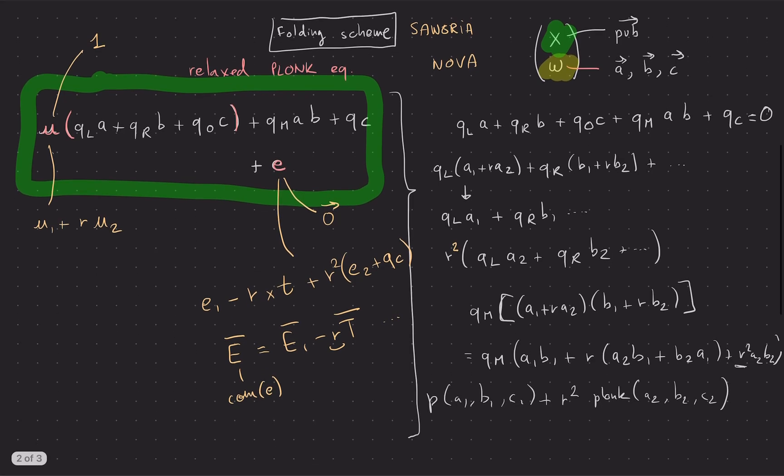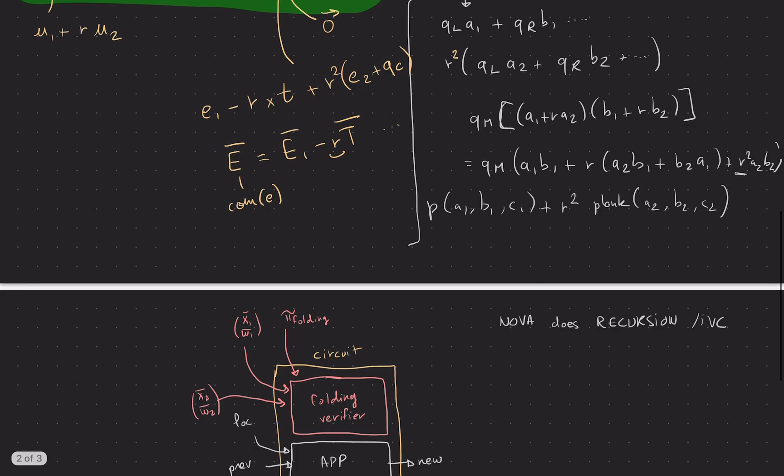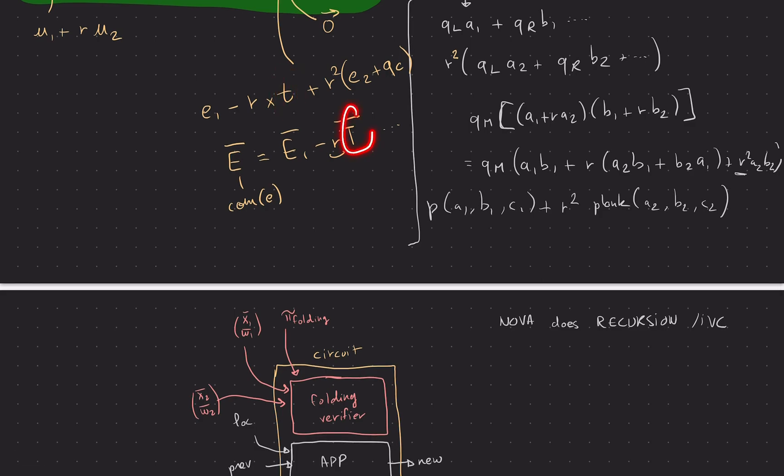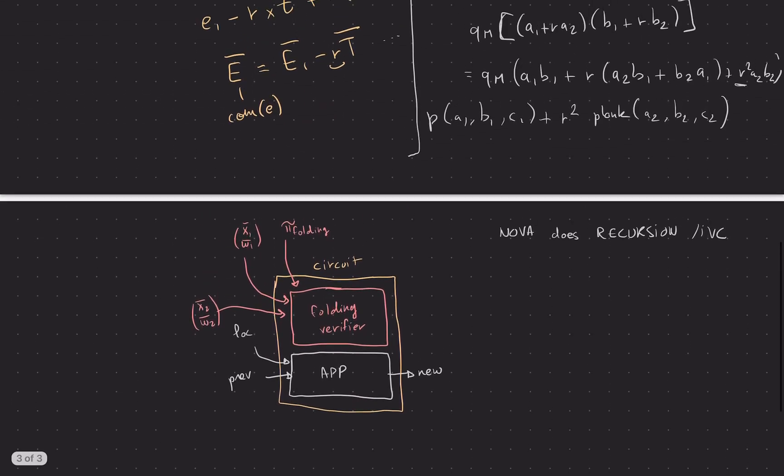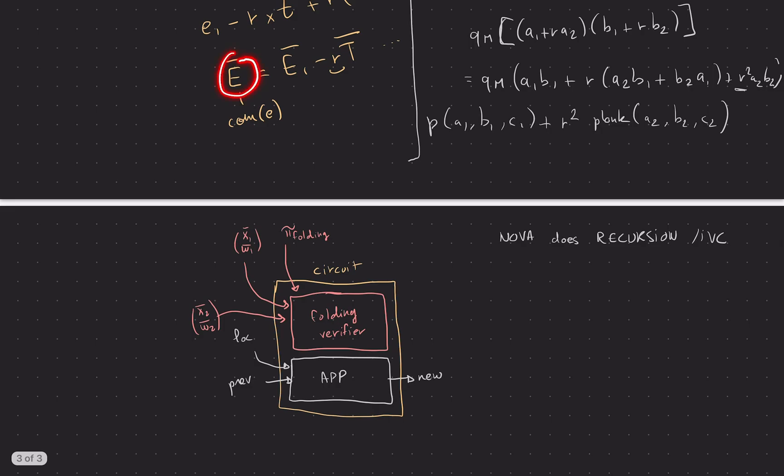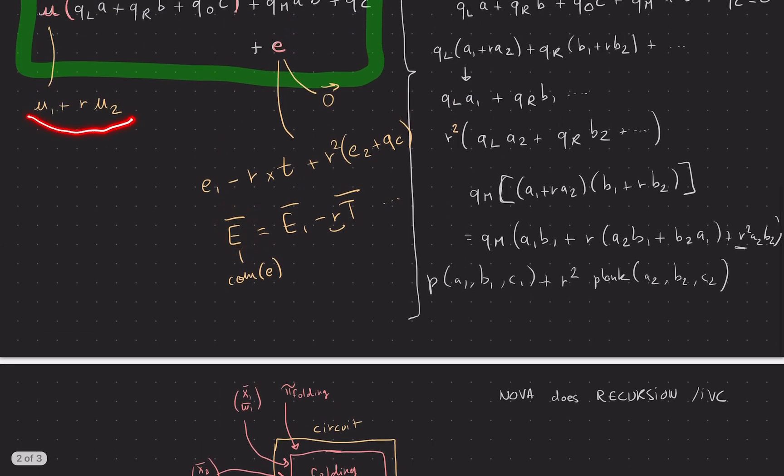It's also going to take a proof of folding. If you remember correctly in the previous video on Sangria, there is this error slack that's created from a t that's provided by the prover. So the proof here of the folding contains this t commitment or the t commitment of the vector of the prover that we need to verify the folding was done correctly, because we need to compute the new error which is the only thing in the protocol that's not computed by simply doing a random linear combination.